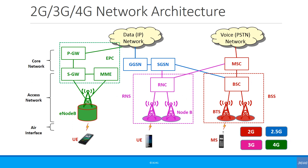Let's look at the network architecture. There are two types of core network for every mobile: circuit switched and packet switched. Circuit switched is covered by MSC in 2G and 3G networks. In 4G you only have packet switched. So in 2G and 3G you have the SGSN and GGSN for the packet switched, whereas the core network in 4G is packet switched only.